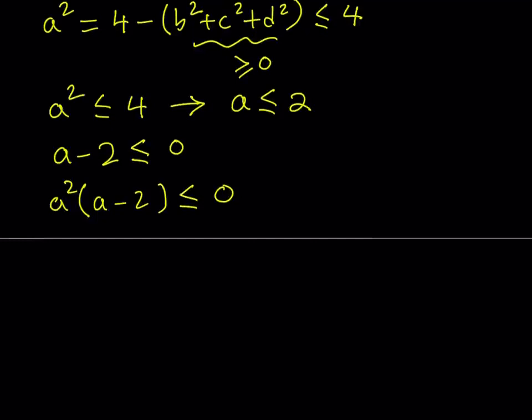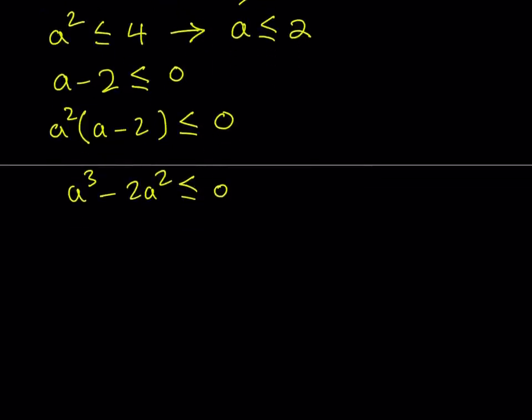So what am I going to do next? Let's distribute: a cubed minus 2a squared is less than or equal to 0. This is the critical part because not only a squared is a good thing to multiply both sides by, but also it gives us what we are looking for, which is the sum of the cubes. But I have cubes and squares on both sides. So let me add 2a squared to both sides. And this gives us a cubed is less than or equal to 2a squared. We now know the relationship between the cubes and the squares.